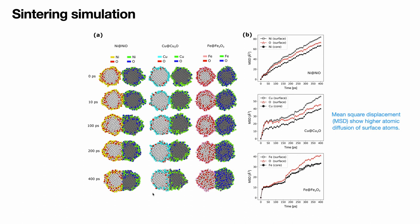But if we plot and compare the mean square displacement (MSD) of surface atoms and core atoms, we can see that the surface atoms are the ones that diffuse more and therefore contribute to the sintering process. In that sense, the mechanism here was similar to that of pure crystalline metal nanoparticles.